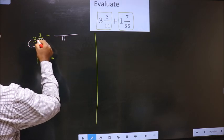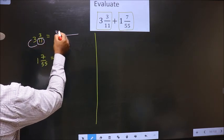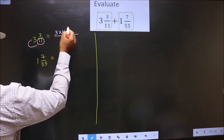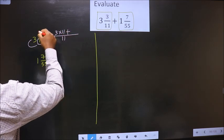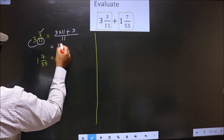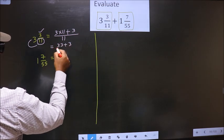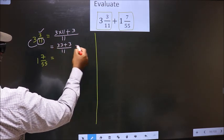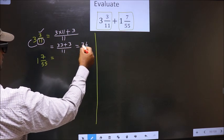That is 3 into 11, and also add this number, that is 3. So, 3 into 11 is 33 plus 3 by 11. So, 33 plus 3 is 36 by 11.